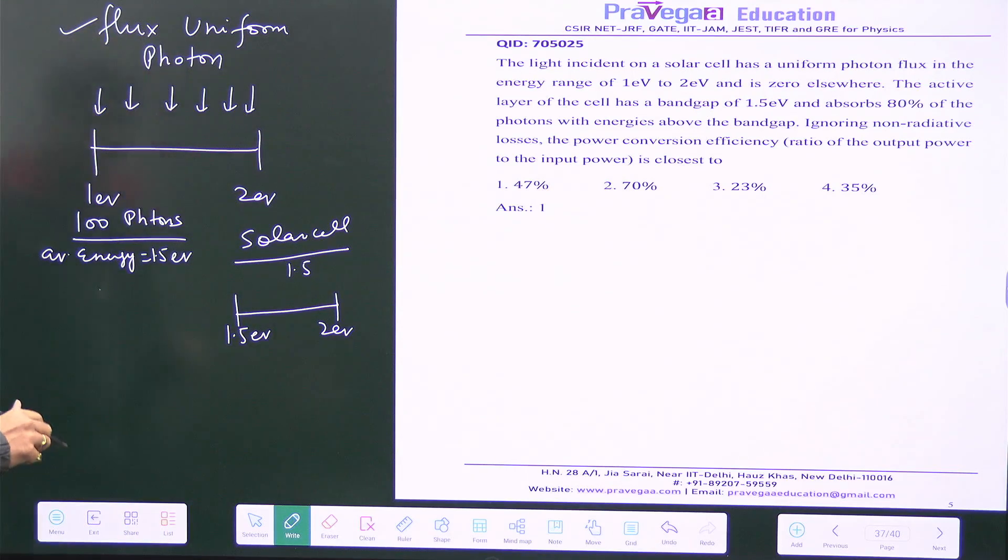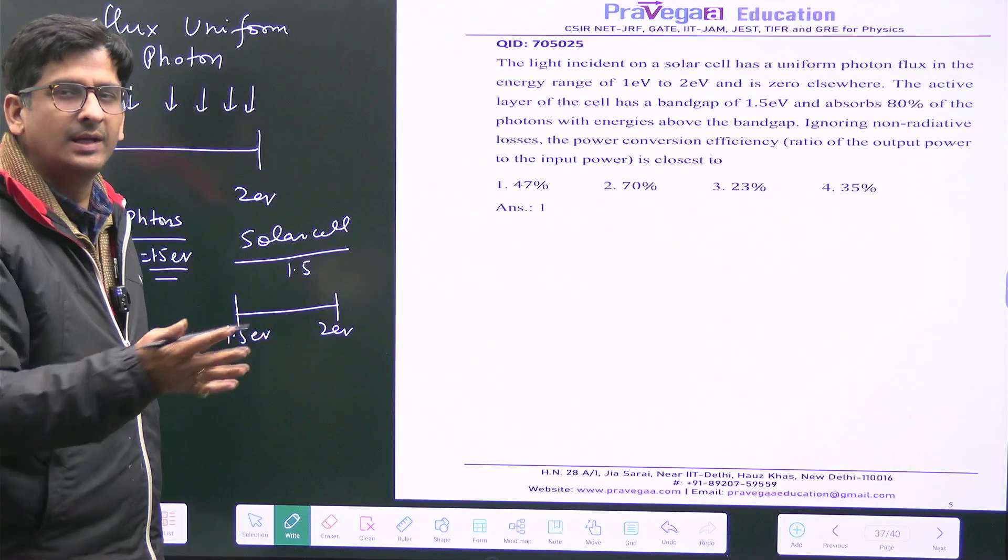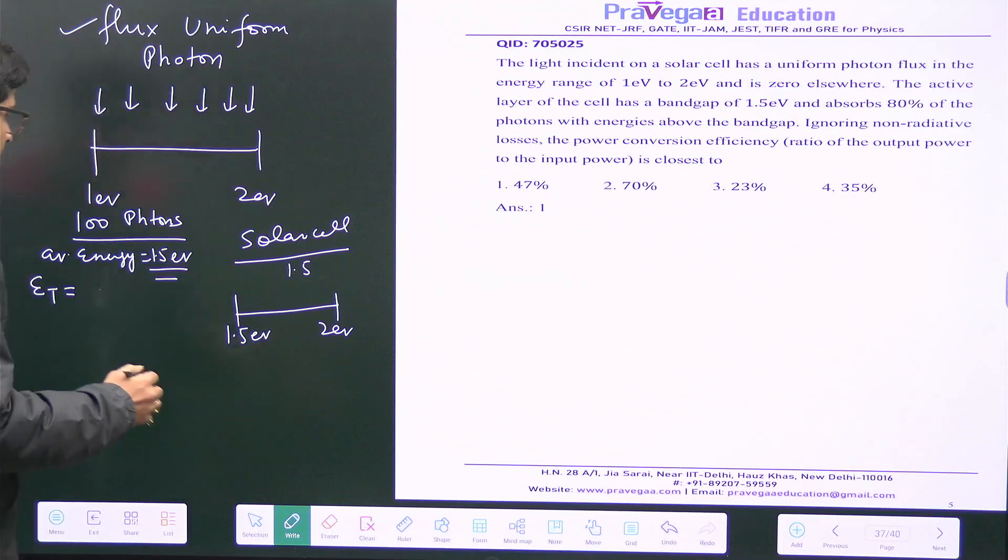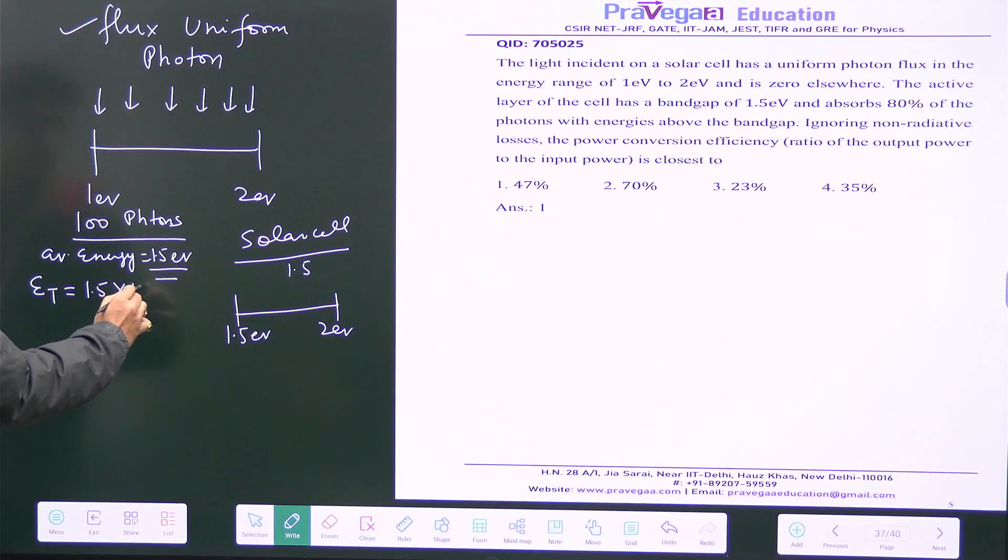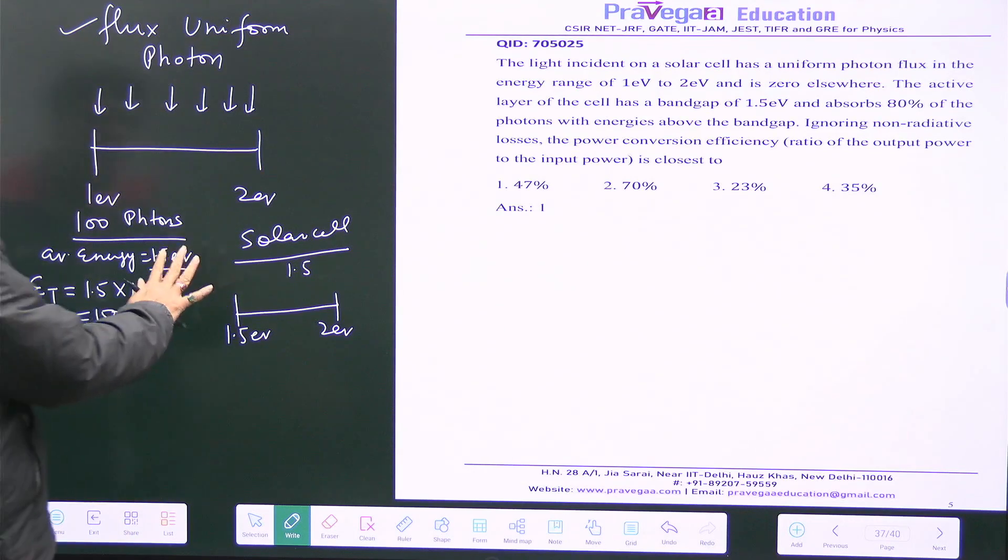This is the average energy and there are hundred photons. So what is total energy? This photon is per second, they are falling per second, so it's kind of power. 1.5 into 100 is equal to 150 electron volt in terms of energy input.